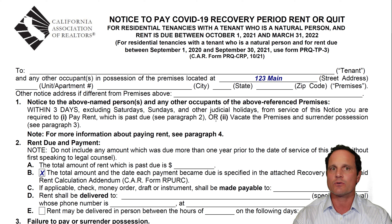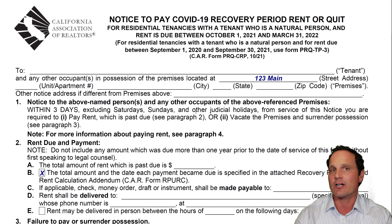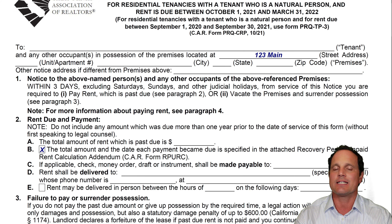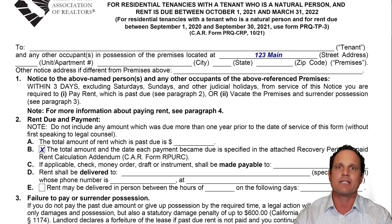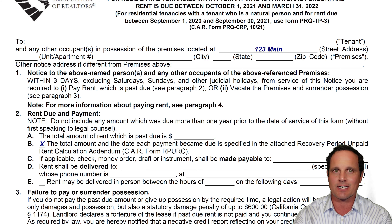Let's dive into this form. The top is always the same — it shows who it's going to and the address for the property. If it's being sent to a different address, maybe to a co-signer, there's room for that. Number one: within three days, not including Saturdays, Sundays, and holidays, the resident either needs to pay the rent or move out. Those are basically their two choices, and if they don't, that's up to the attorney to take it to the next steps.